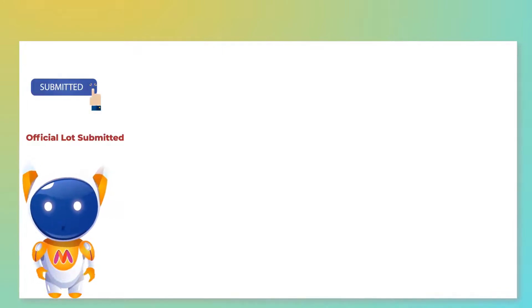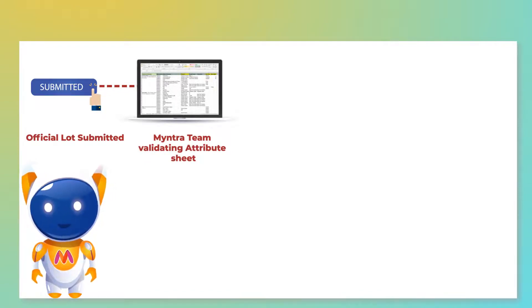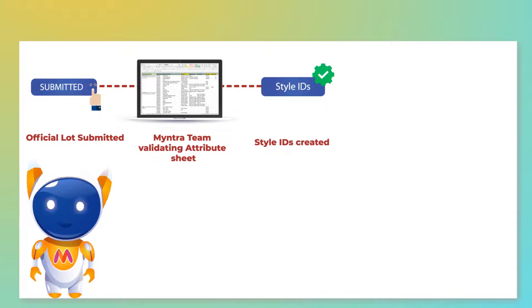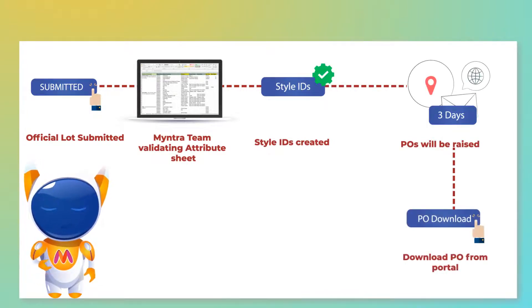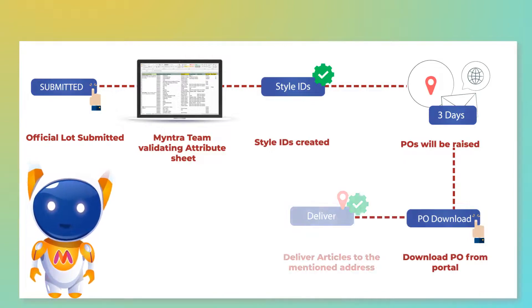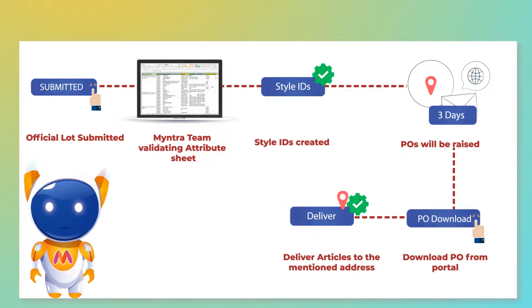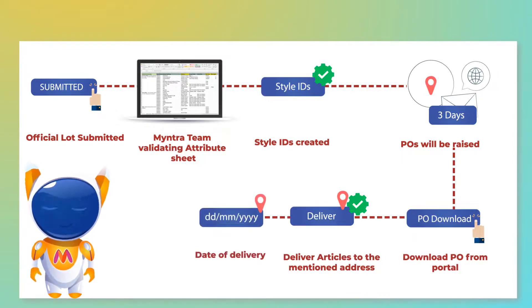Once the lot is submitted from your end, the Myntra team shall validate your attribute sheet and, in case of no errors, shall create Myntra style IDs for the articles and raise a PO within three business days. The PO shall be downloaded from the partner portal to deliver the articles to the address mentioned in it. You need to provide an estimated date of delivery to Myntra once the PO is received.